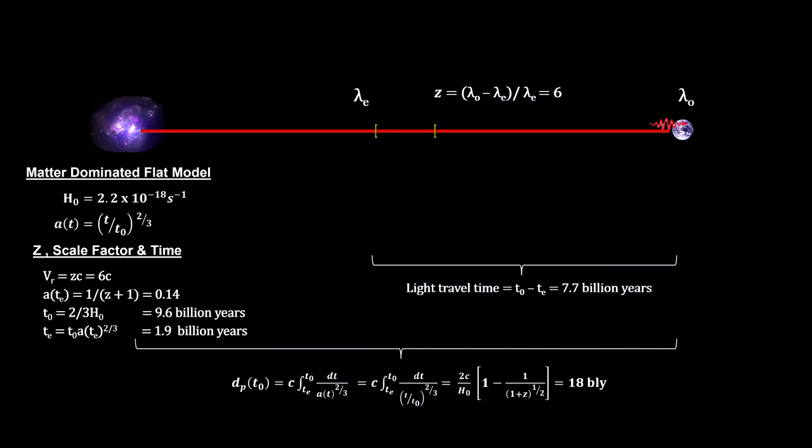Redshift gives us the distance to the object at the current time, and it gives us the distance to the object at the time the light was emitted. You can see why astronomers rely so heavily on redshift measurements.